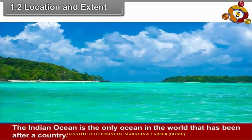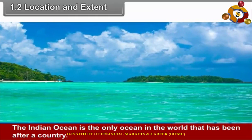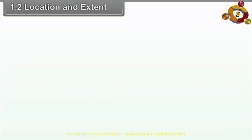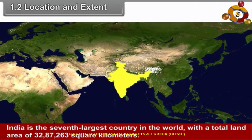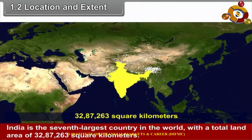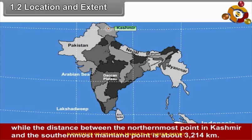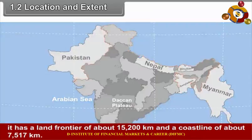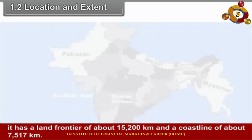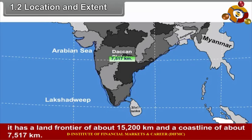The Indian Ocean is the only ocean in the world that has been named after a country. India is the 7th largest country in the world with a total land area of 32,87,263 km². The distance from the westernmost point in Gujarat to the easternmost point in Arunachal Pradesh is about 2,993 km, while the distance between the northernmost point in Kashmir and the southernmost point is about 3,214 km. It has a land frontier of about 15,200 km and a coastline of about 7,517 km.